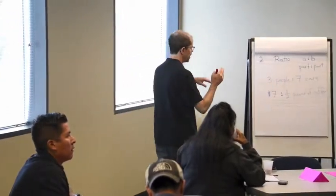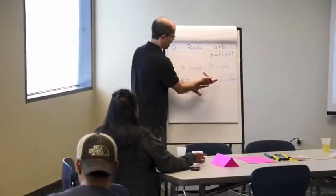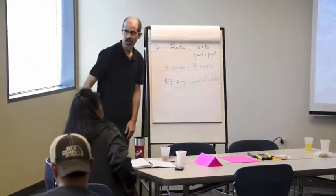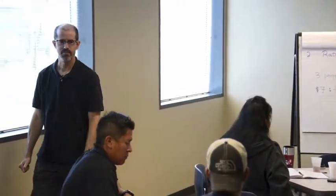You paid $7 for a half pound of coffee. $7 per half pound — it wasn't per pound, it was a half pound. Do you agree that that's a ratio?